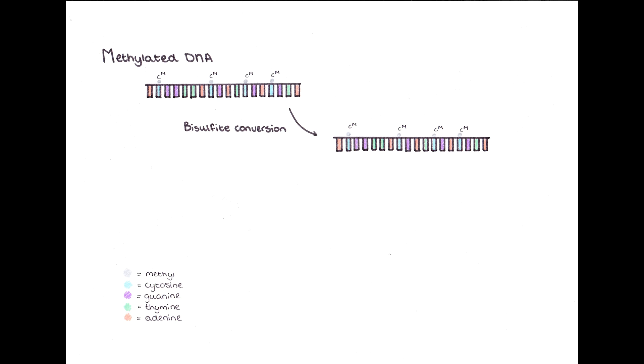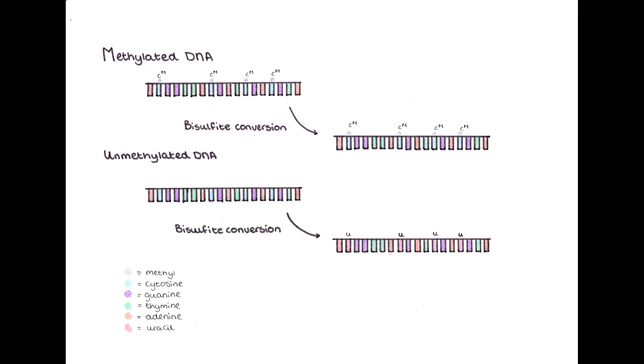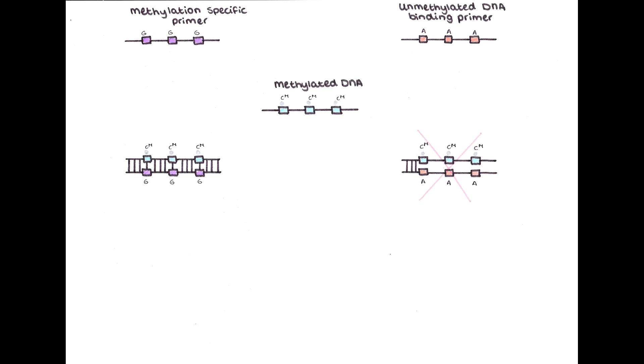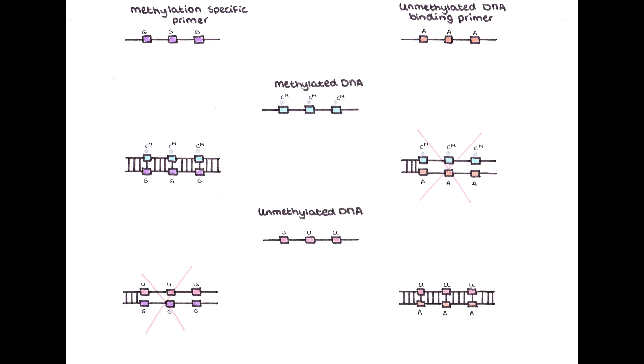A methylated DNA strand would then look like this, and an unmethylated DNA strand would look like this. To detect the difference between the two DNA strands, two different primers are used: a primer with the methylated sequence and a primer with the unmethylated sequence. The methylated strand will bind to the methylated primer but not to the unmethylated primer. The unmethylated strand will bind to the unmethylated primer but not to the methylated primer.